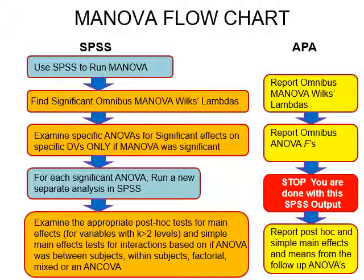In APA style, this will look like a paragraph reporting the overall Wilks Lambda, then a paragraph reporting the overall omnibus ANOVA Fs, and then a section for each DV that gets into the details — post-hoc tests, simple main effects, whether the interaction was significant, and so on.